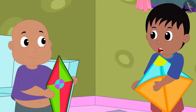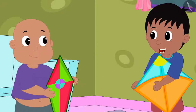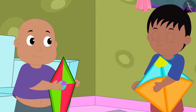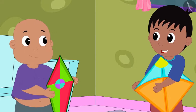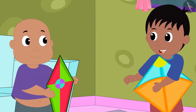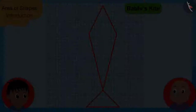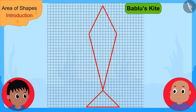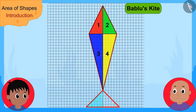Raju said, 'Oh wow, Bablu, this is a very easy process. Let me use it now to find the area of your kite.' Having said this, Raju drew such a triangle in the outline of Bablu's kite.